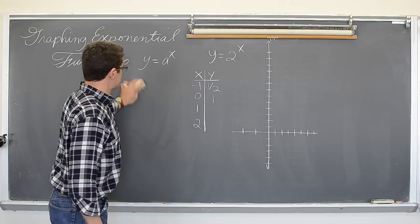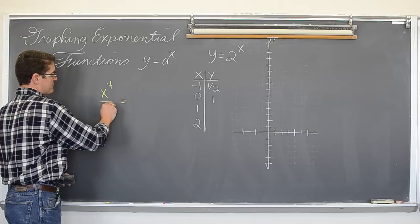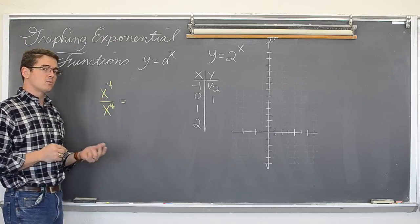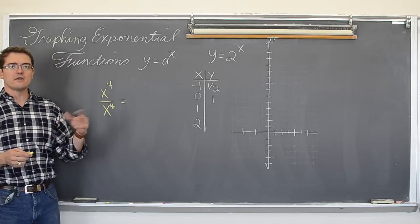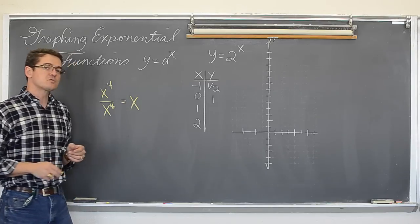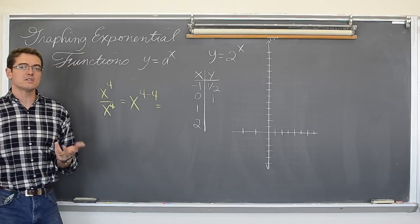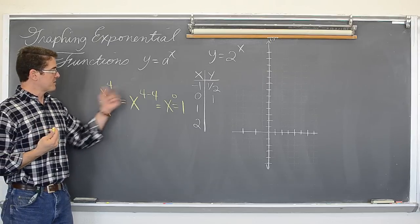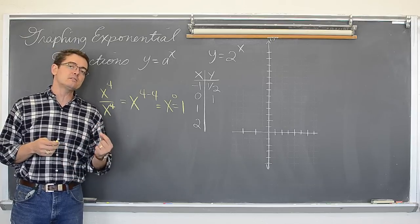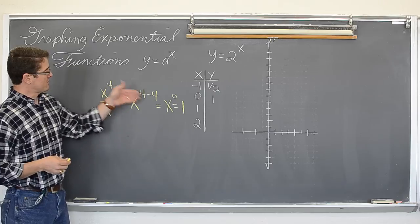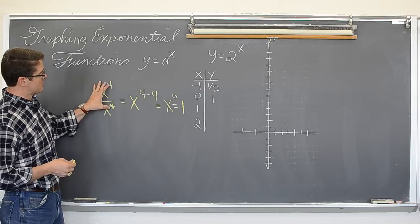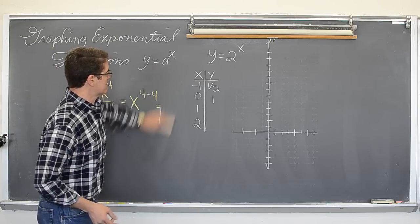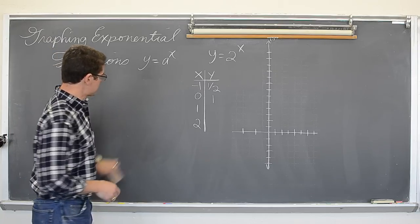How does that show why everything to the zero power is equal to one? Well, if I change that exponent of one to an exponent of four — x to the fourth divided by x to the fourth — you know that anything divided by itself equals one. But if I apply the exponent rule of subtracting exponents when dividing like bases, what is four minus four? Zero. So x to the zero power equals one. This is just an example, not a formal proof, but it gives a concrete reason rather than just saying memorize it.